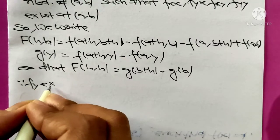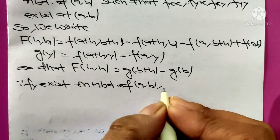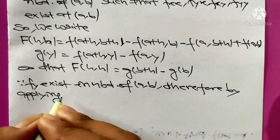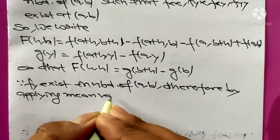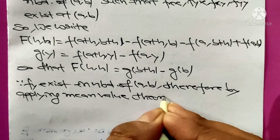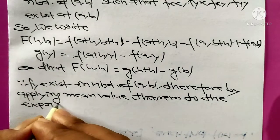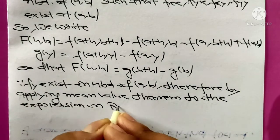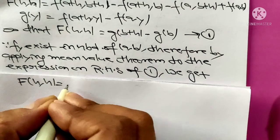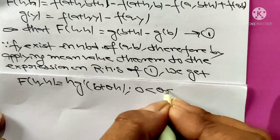Since fy exists in a neighborhood of point ab, therefore by applying mean value theorem to the expression on right hand side of equation 1, we get F(h,h) equals h times g'(b + θh) where θ lies between 0 to 1.